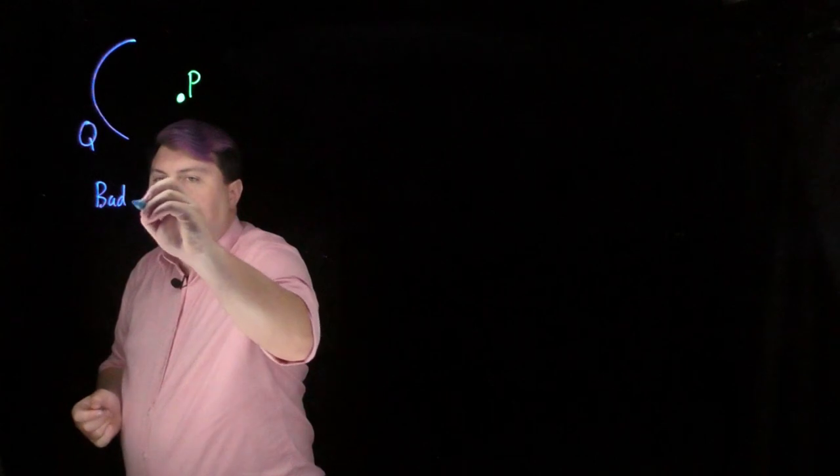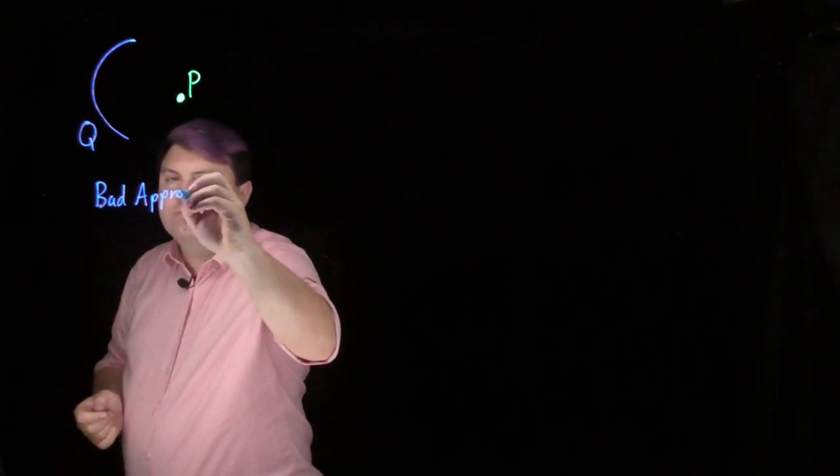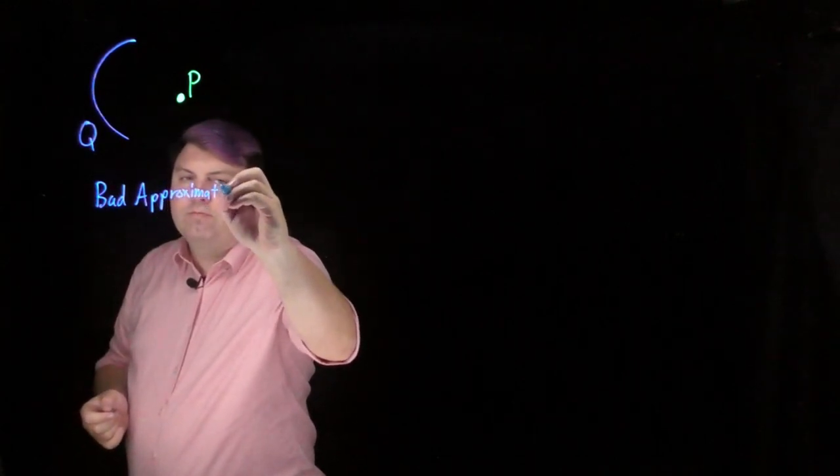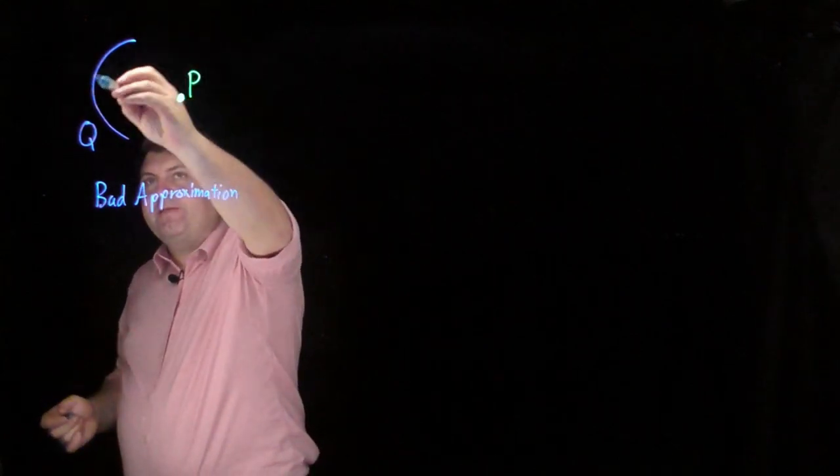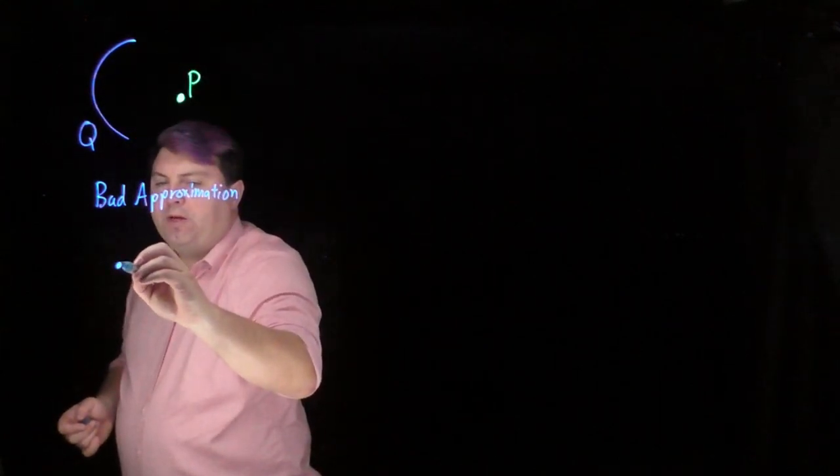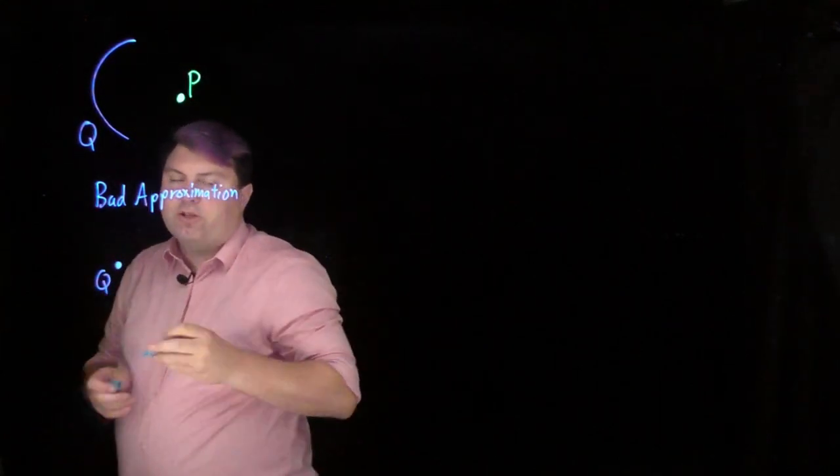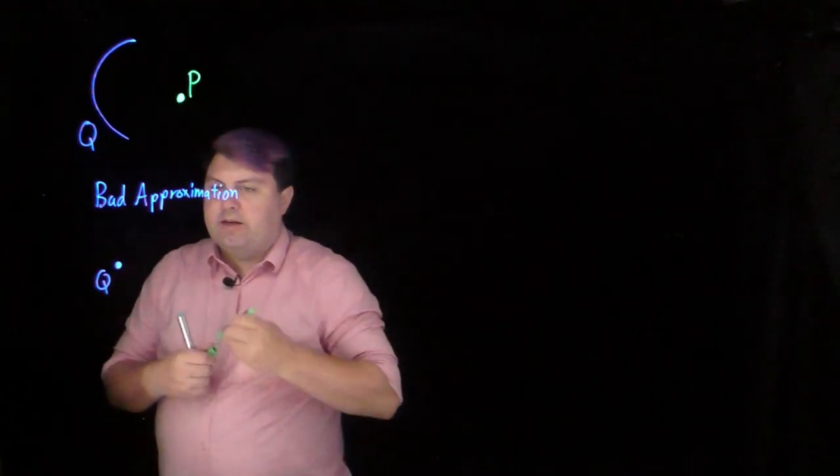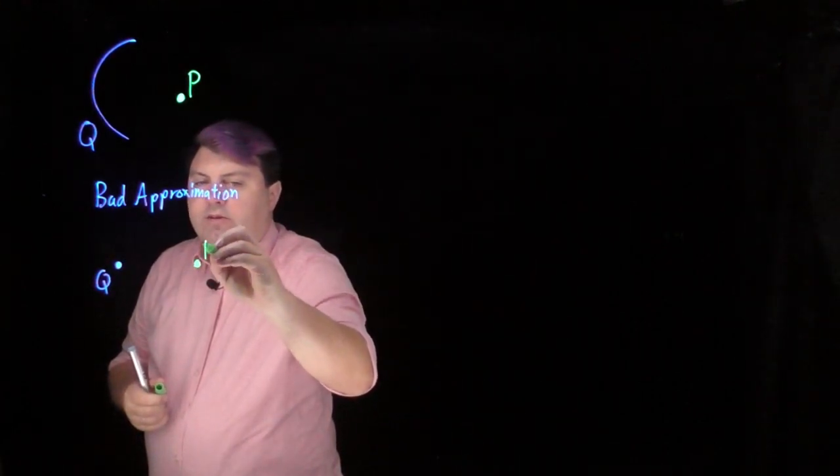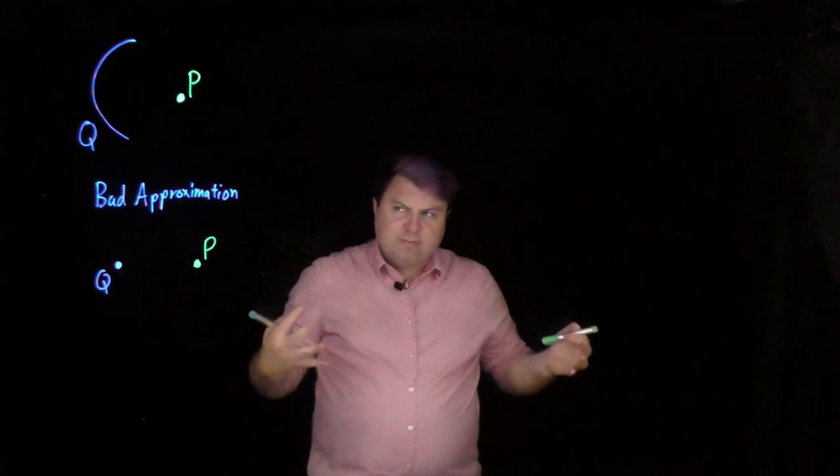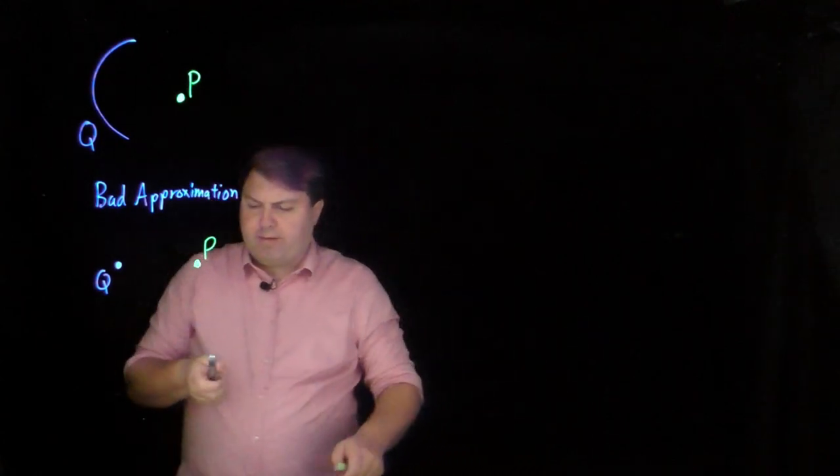So first off would be a bad approximation. A bad approximation of the field from this shape would be just condensing it all into a single charge and then seeing what the field would be. I feel that we all feel this is a pretty bad approximation.